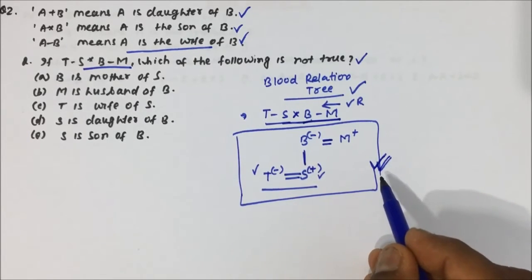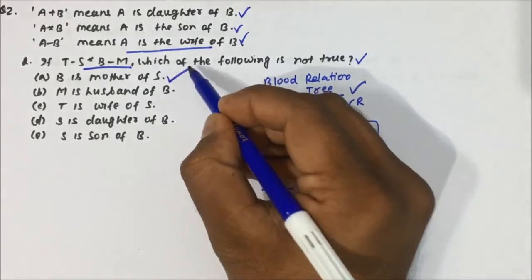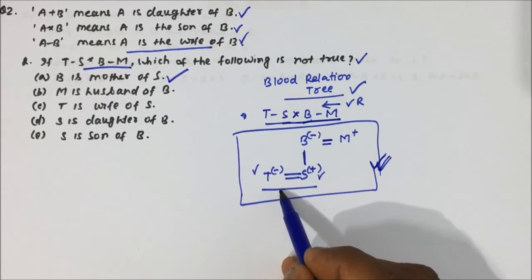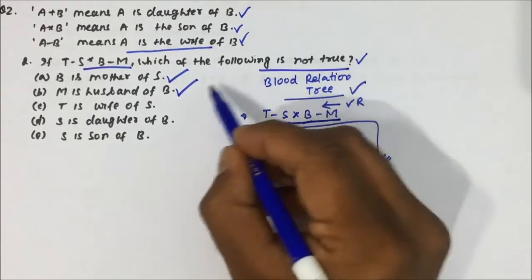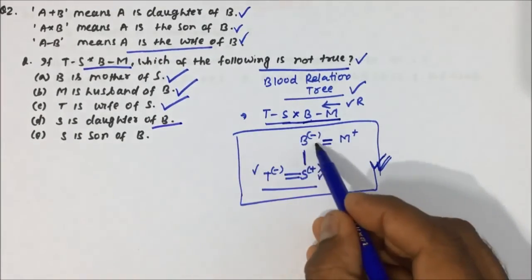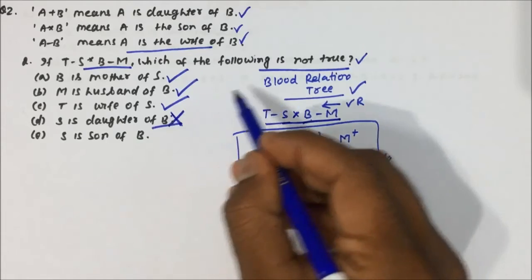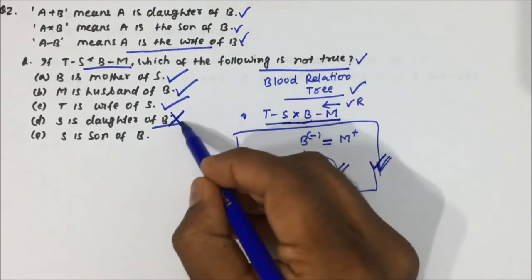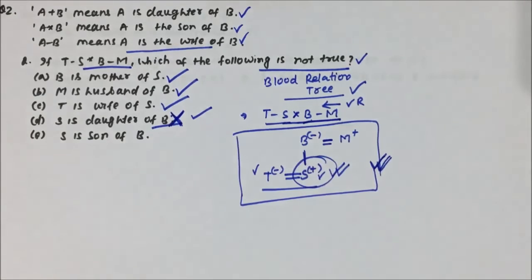Once we have the Blood Relation tree, it is very easy to answer the question. The question asks which of the following is NOT true. 'B is mother of S' — correct. 'M is husband of B' — correct. 'T is wife of S' — correct. 'S is daughter of B' — S is not a daughter, S is male, S is son of B. So option D is the not-true statement and is the correct answer for Question 2. I hope you understood the Blood Relation tree, the questions, and the solutions. Thanks a lot for watching the video.